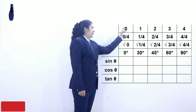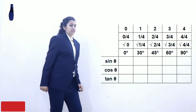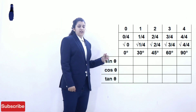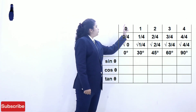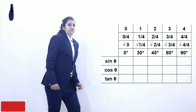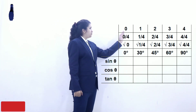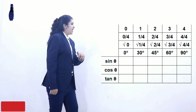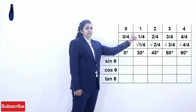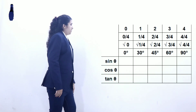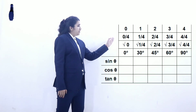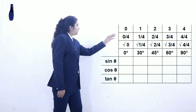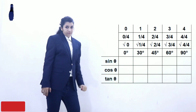We have 5 angles: 0, 30, 45, 60, 90. To calculate sin θ, we start by writing 0, 1, 2, 3, 4 — we have 5 columns. The trick is that you have to divide all these numbers by 4: 0÷4, 1÷4, 2÷4, 3÷4, and 4÷4.